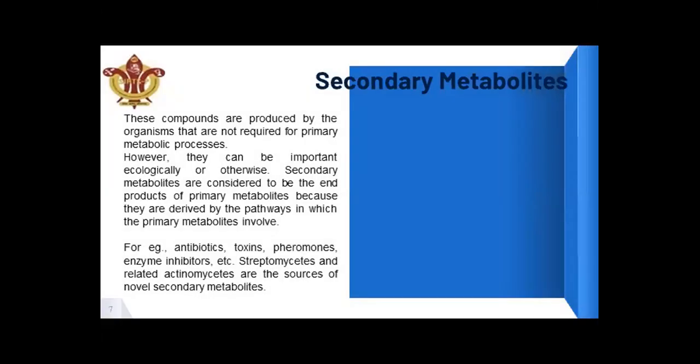Secondary metabolites are compounds produced by organisms that are not required for basic growth and development like primary metabolites, but they are the end products derived from primary metabolites. Examples of secondary metabolites include various compounds produced in plants and animals such as cholesterol, whereas primary metabolites include carbohydrates and other substances used for energy and the developmental phase.